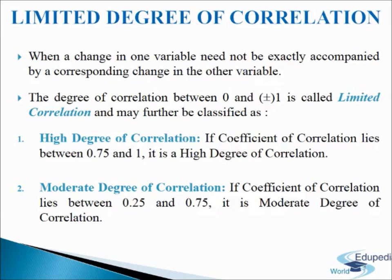Next, we come to low degree of correlation. If the coefficient of correlation lies between 0 and 0.25, it is a low degree of correlation.